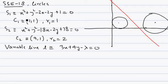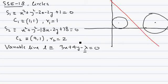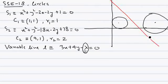There are two circles given in this question, S1 and S2, and these are fixed circles — not variable. There is also a line given and that's a variable line. Lambda is included in the line. The question says we have to find the possible values of lambda such that the two fixed circles lie on either side of this line.